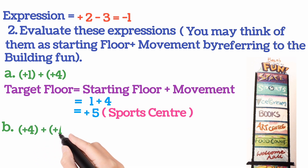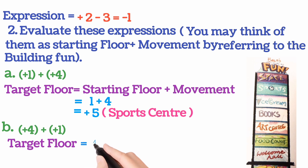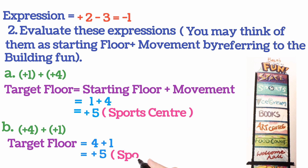Next, sum number B: plus 4 plus (plus 1). Where will we reach? Target floor equals our present floor — we are on the 4th floor — so starting floor is 4. We place the button plus 1 inside the lift. So 4 plus 1 equals 5. We again reached the 5th floor — meaning sports center. That is where we reached.